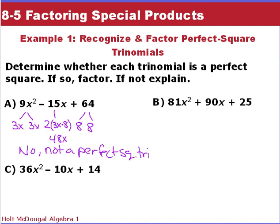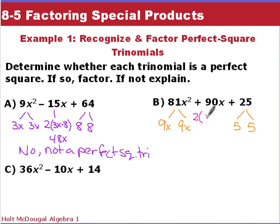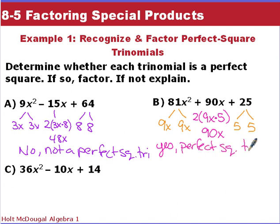Looking at Example B, we check if A is a perfect square: we get 9x and 9x, giving us 81x². 25 is a perfect square — 5 and 5. Now we check the middle term: B will be 2 times 9x times 5, which equals 90x. So yes, this is a perfect square trinomial, and it factors into (9x + 5)².